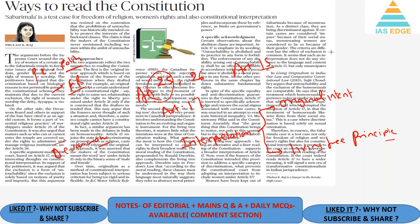On the other hand, the temple board and others supporting the women's entry ban cited it as an age-old custom under Article 25 of the Constitution. They argued that matters of who can and cannot enter the temple are covered under the right to administer and manage religious institutions under Article 26. The petitioner also argued that exclusion of women violates Article 17, as it is a form of untouchability based on notions of purity and impurity. The counter-argument was that prohibition of untouchability was meant to protect the interests of backward classes, and the framers of the Constitution never envisioned including women within the ambit of untouchability.